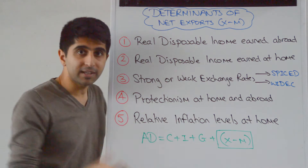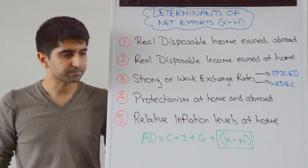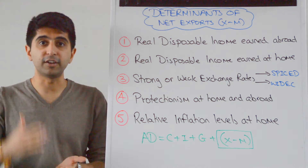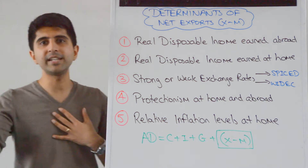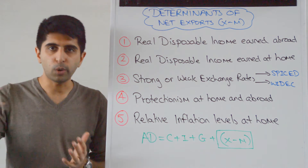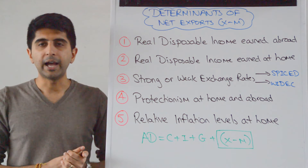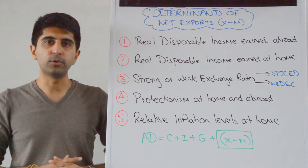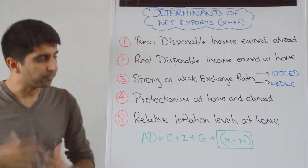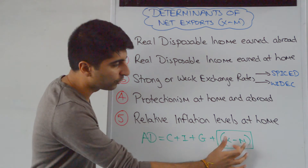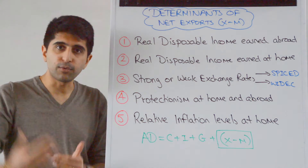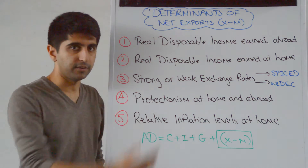However, if there is strong protectionism at home, it might mean that the value of import expenditure is going to be low. So if we have high tariffs on imports coming in from abroad, or quotas on imports from abroad, or if we have embargoes on imports from abroad, it will reduce import expenditure, ceteris paribus, and therefore reduce the value of M and help to shift AD to the right as the value of this bracket increases.